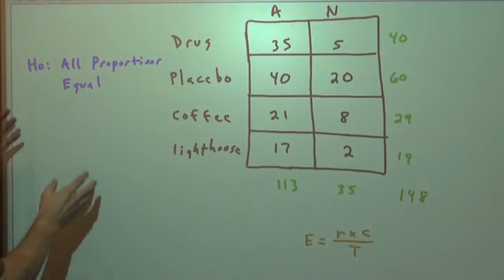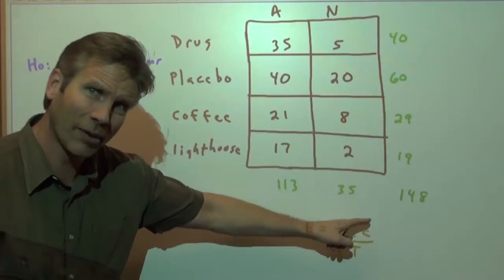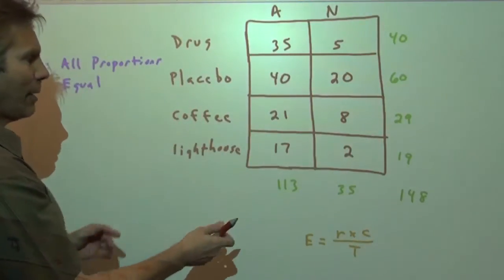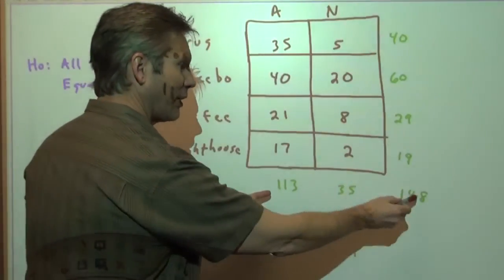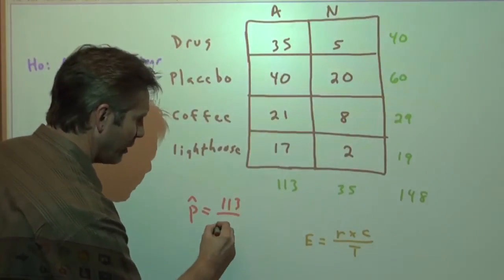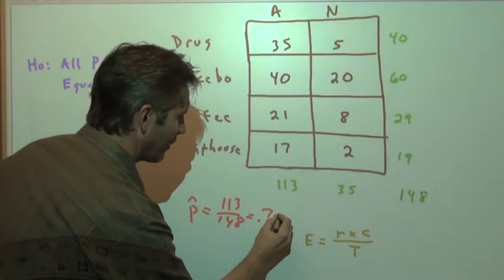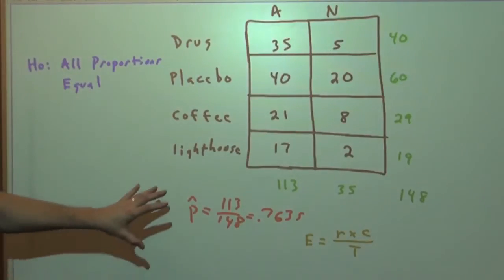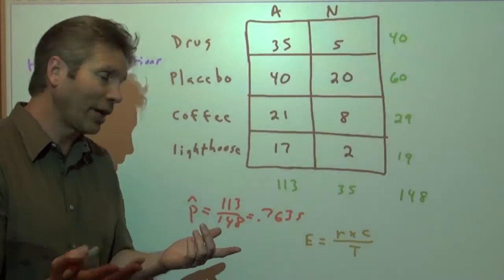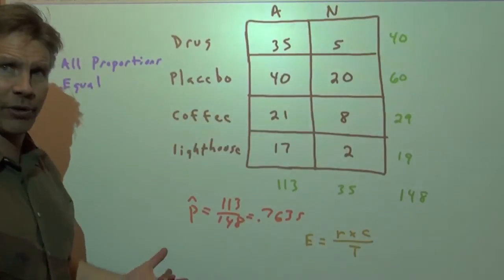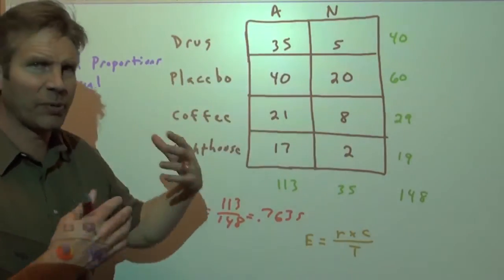Now, the null on a chi-squared test is going to be that all the proportions are equal, that there's no difference. And then again, remember, the expected count is the row total times the column total divided by the grand total. So what we're saying is that all together, in all these samples, we ended up with 113 people out of 148 who were able to stay awake. Well, that's like a pooled p-hat. All together, 113 out of 148 stayed awake. So that is about 0.76. That's 76% of the people are staying awake. So that's the pooled p-hat. If the null is true and all the proportions are equal, then we assume for any sample, we're going to get about that proportion of people staying awake, doesn't matter what treatment group they're in, and we would only attribute the differences to just being due to random chance.